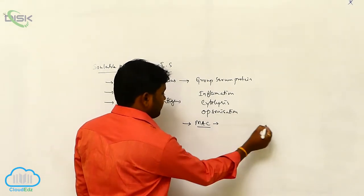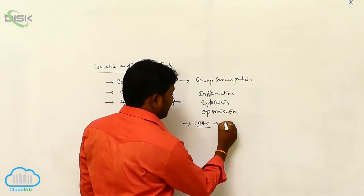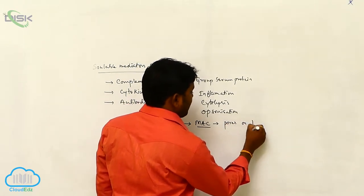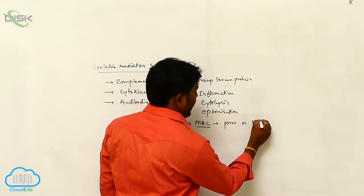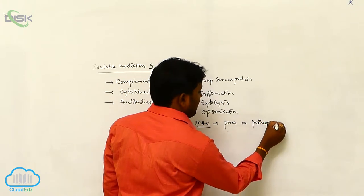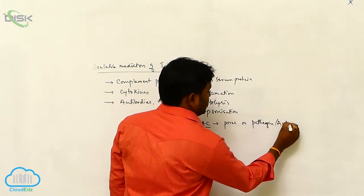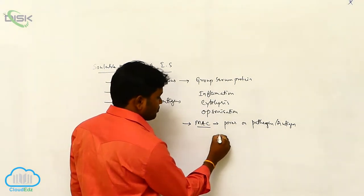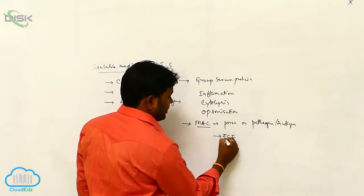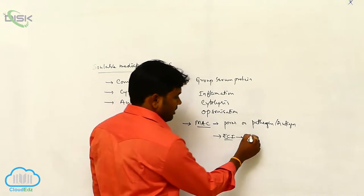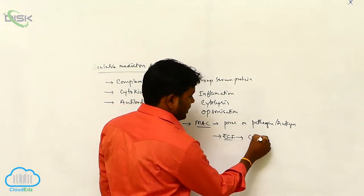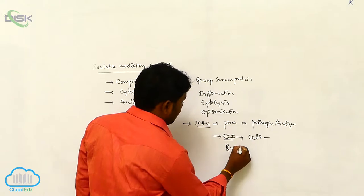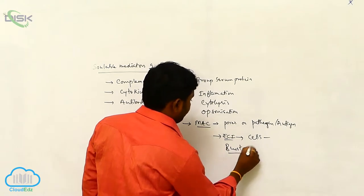The membrane attacking complex is responsible for forming pores on the pathogen or antigen. These pores allow extracellular fluid to enter into the cell, which causes the cell to swell and burst.